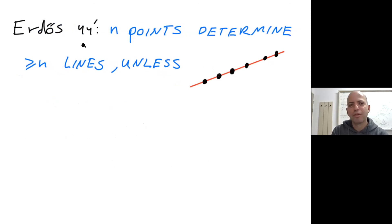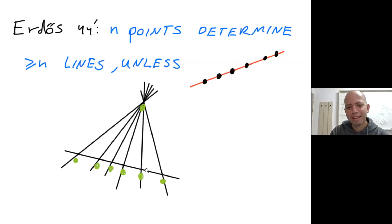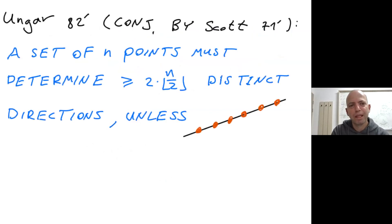This is a classical result of Erdős from 1944: n points in the plane determine at least n distinct lines, unless they are all collinear. Here's an example — I have to apologize, the line should pass through the green points. Anyway, this is an extreme example where there are exactly n lines determined by the n points, and this is the only extremal example.